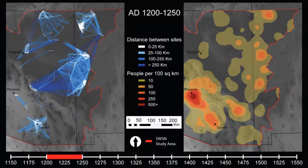The lines are color-coded based on physical distance between sites, with white representing short distance ties, and the darkest blue representing long distance ties exceeding 250 kilometers.